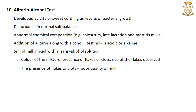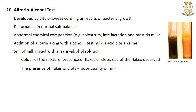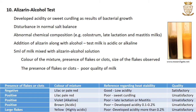Next is the alisarin alcohol test. The stability of milk to alcohol or high temperature is affected by developed acidity or seed curdling as a result of bacterial growth, disturbance in the normal salt balance in the milk, and abnormal chemical composition of the milk as in colostrum, late lactation or mastitis milks. The alcohol test is used to assess the stability of milk to heat processing, and the addition of alisarin along with alcohol helps to find out whether the milk is acidic or alkaline. For this test, 5 ml of milk is mixed with an equal quantity of alisarin alcohol solution in a test tube by inverting the tube several times. The color of the mixture and the presence and size of flakes or clots will be observed. The presence of flakes or clots indicates poor heat stability and unsatisfactory quality of milk.